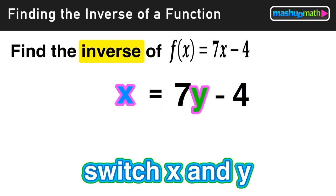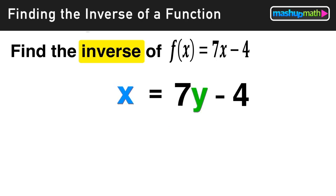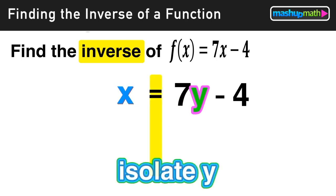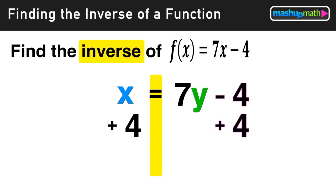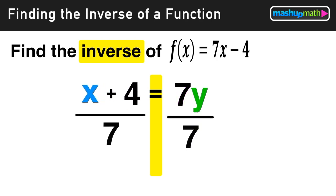So now what we have here is a new function, and what we need to do next is isolate the y and get it in y equals form, and that will represent the inverse. We can do this pretty easily, first by adding 4 to both sides. On the right side, that negative 4 will cancel out. On the left side, x plus 4 I cannot simplify, I just leave it as x plus 4. And then finally, I divide both sides by 7.